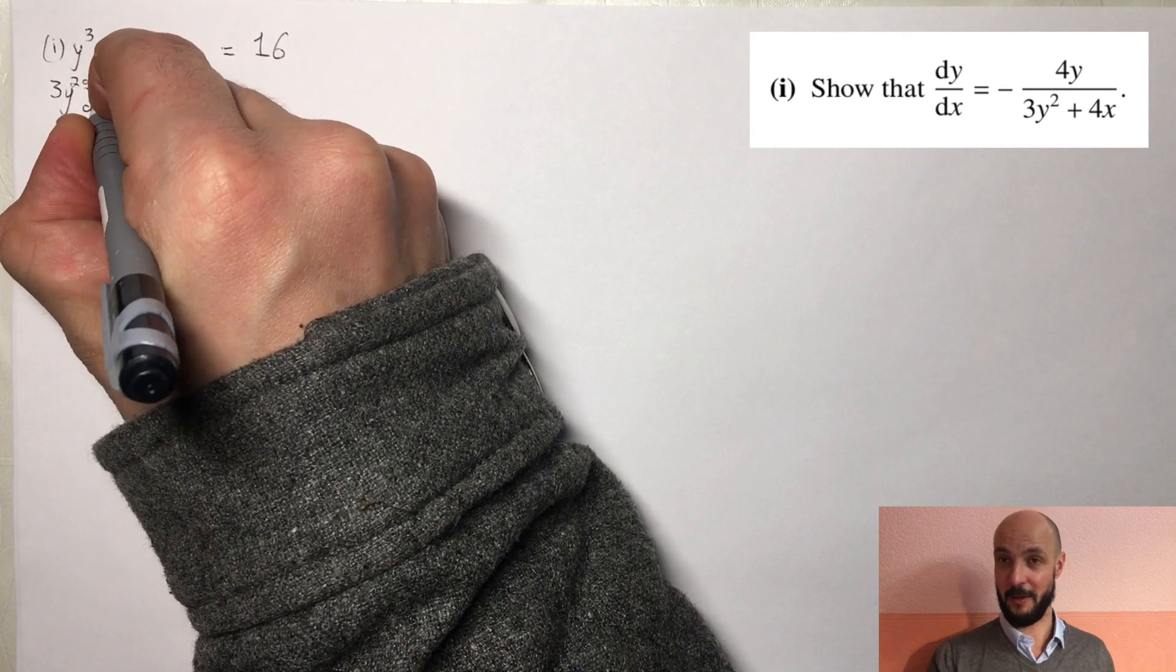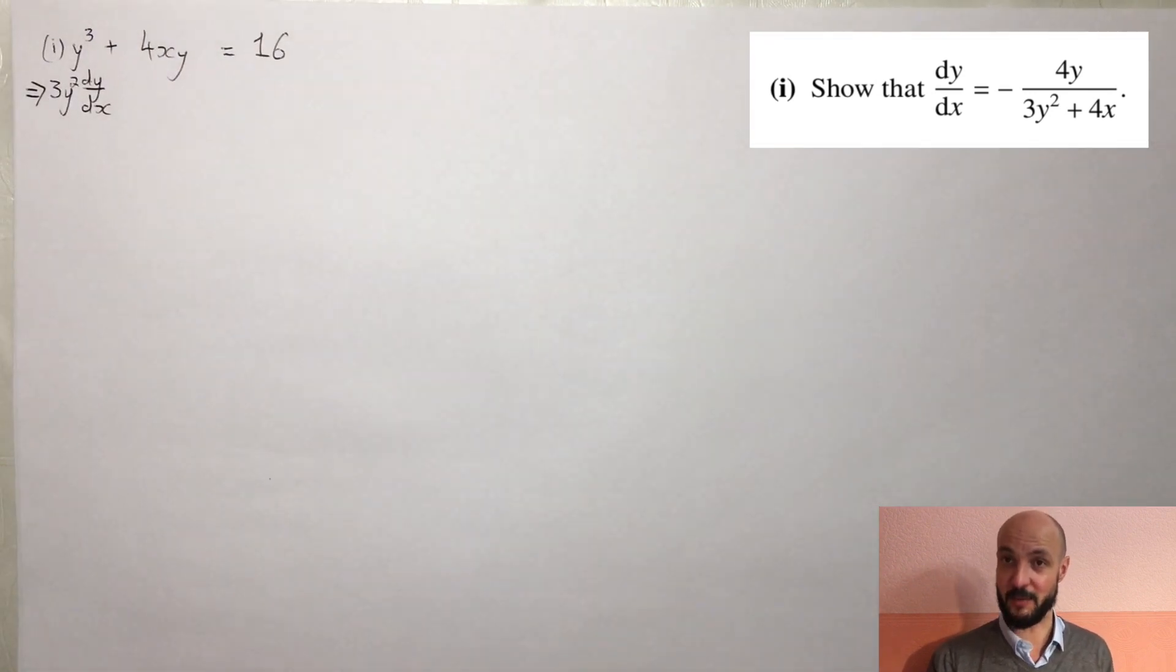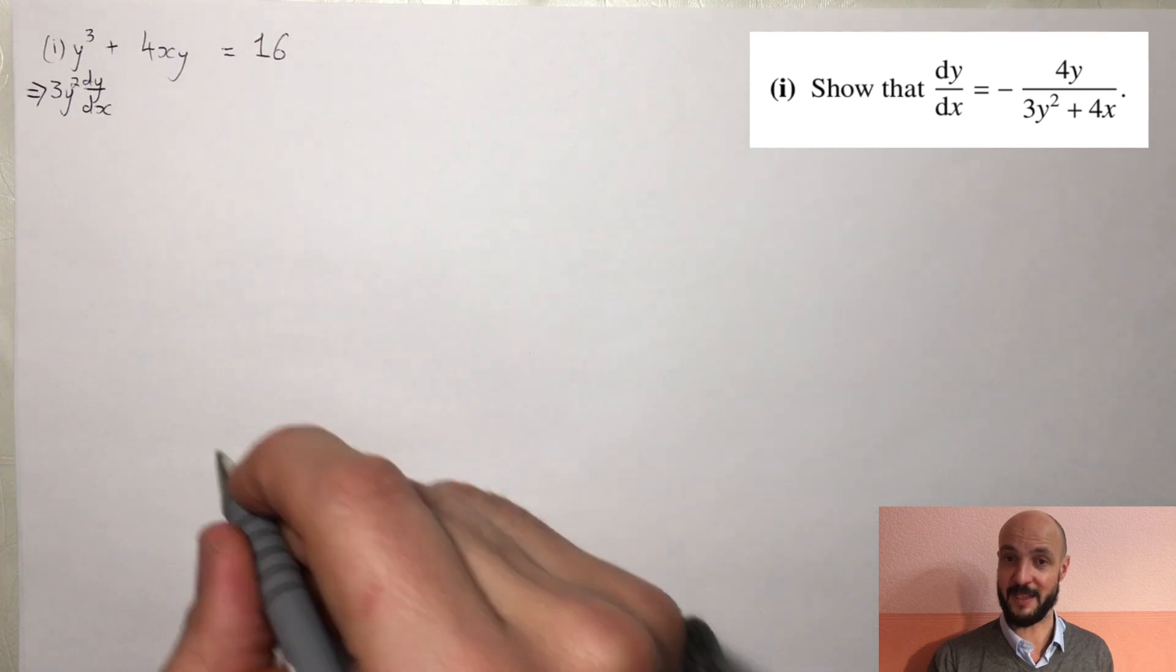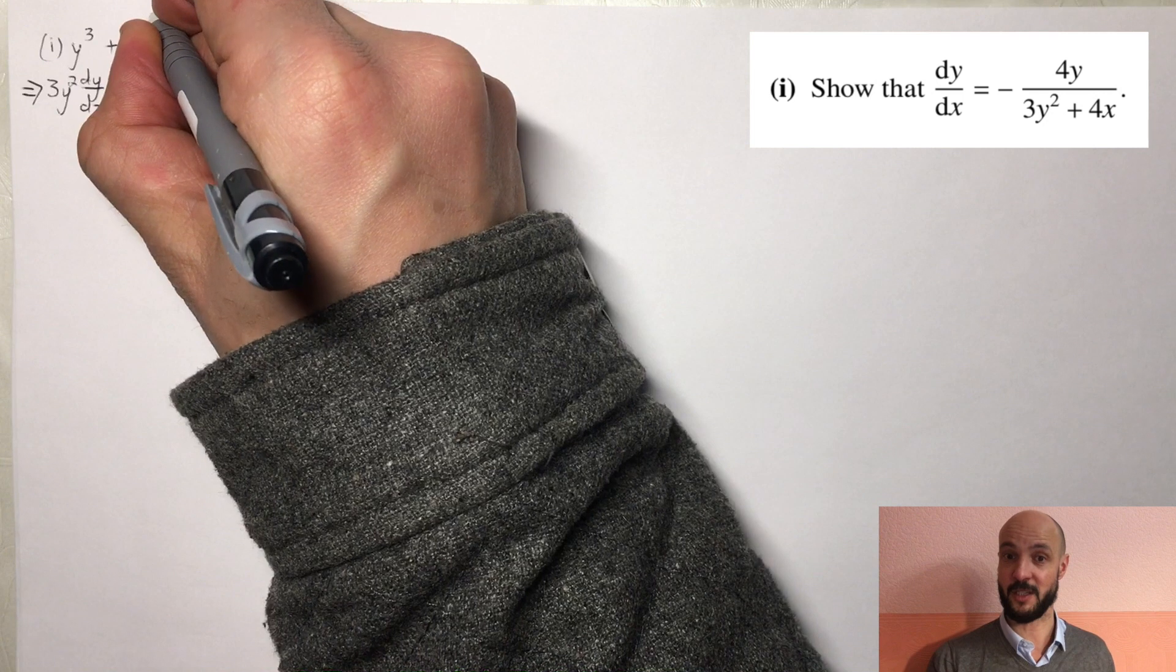Now let's go from the left to the right to differentiate every term. So differentiating y cubed with respect to x we get 3y squared times by dy/dx. If you see that's like the chain rule.